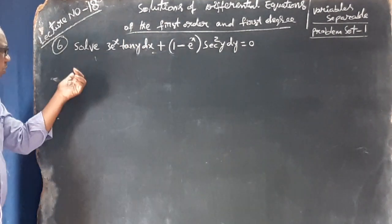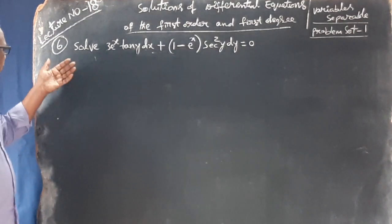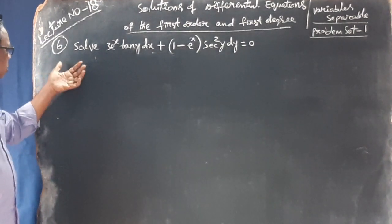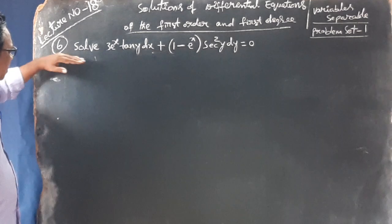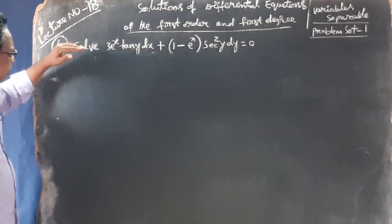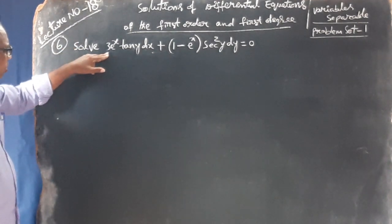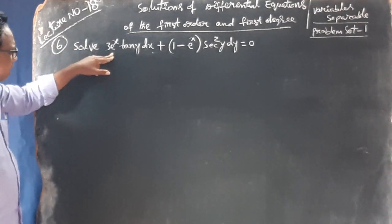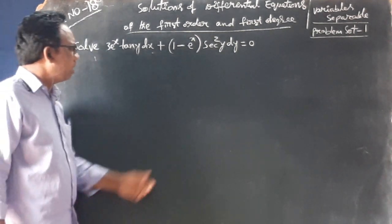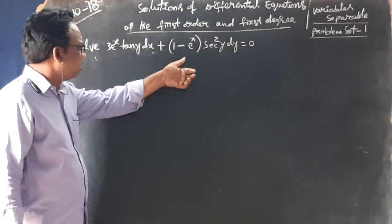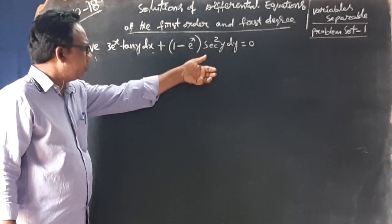Now, this is the 6th sum. Solve the differential equation: 3 into e power x tan y dx plus 1 minus e power x sec square y dy equal to 0.